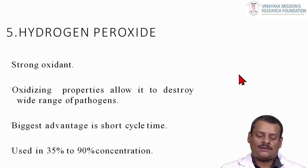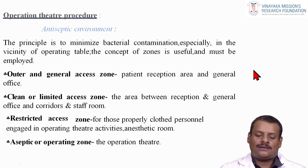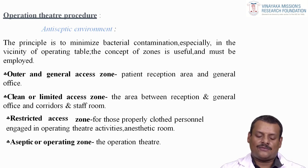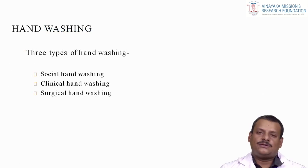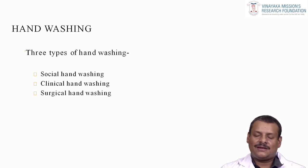Hydrogen peroxide is a strong oxidant; its oxidizing properties allow it to destroy a wide range of pathogens. The biggest advantage is its short cycle time; it is used in concentrations of 35% to 90%. For aseptic environment maintenance in the operating theatre, the principle is to minimize bacterial contamination especially in the vicinity of the operating table. The concept of zones is employed: the outer general access zone includes the patient reception area and general offices; the clean or limited access zone covers corridors and staff rooms; the restricted access zone is for properly clothed personnel in the operating room and anaesthetic room; the aseptic or operating zone is the operation theatre itself.